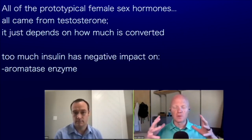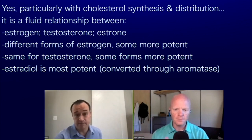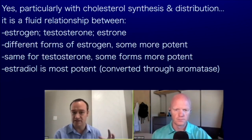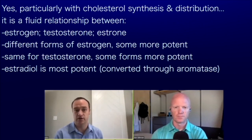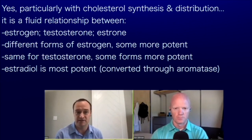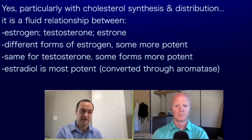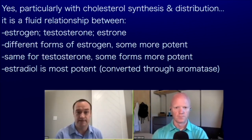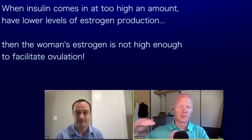Too much insulin actually directly impacts that aromatase enzyme. With cholesterol synthesis and distribution, it's a fluid relationship between estrogen, testosterone, estrone, and estriol — all different forms of estrogen with different potencies. Estradiol is the most potent form and is created directly from testosterone through aromatase. When insulin comes in and disrupts this, we have lower levels of estrogen production, so we have a woman who doesn't have enough estrogens to facilitate ovulation.